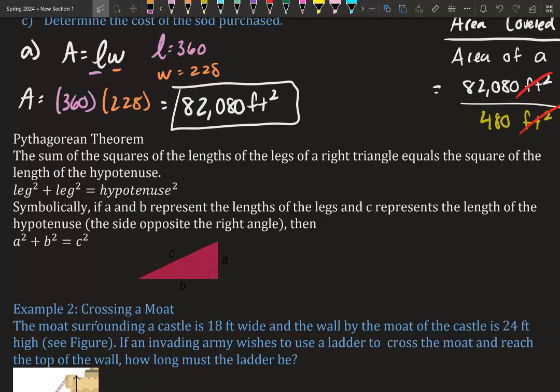The Pythagorean theorem states: the sum of the squares of the lengths of the legs of a right triangle equals the square of the length of the hypotenuse — leg squared plus leg squared equals hypotenuse squared. We write this as a² + b² = c², where a and b represent the lengths of the legs and c represents the hypotenuse. Note: uppercase letters stand for angles, lowercase letters stand for sides.